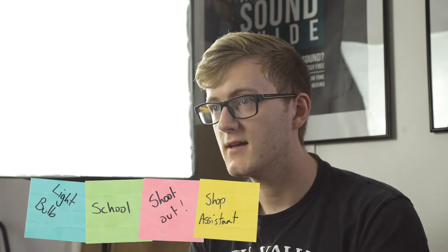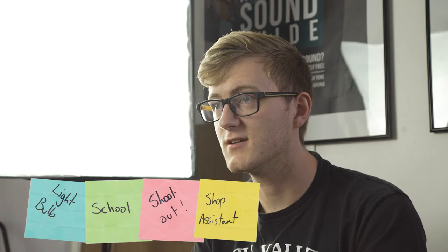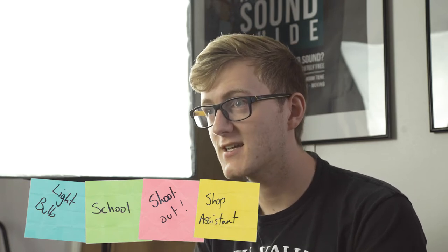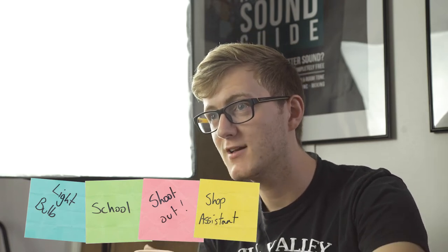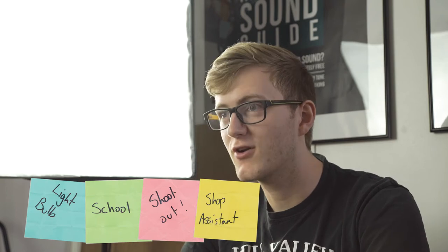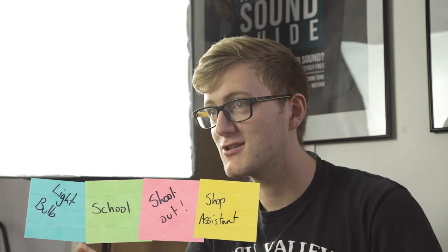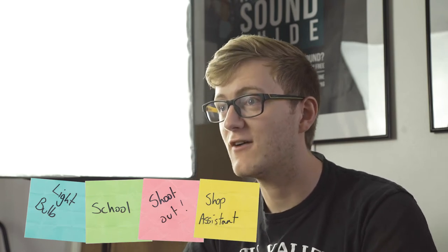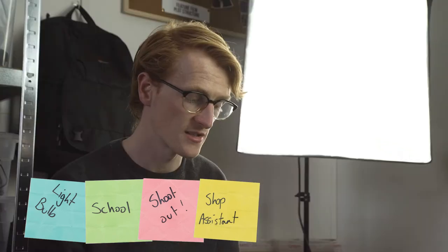He redeems himself by getting people to safety because he knows how to sneak around. One of his tactics is you take a light bulb out, you crush it, and then you put it on the floor — like in the first Mission Impossible movie — so you can hear footsteps. That's how the light bulb fits in.